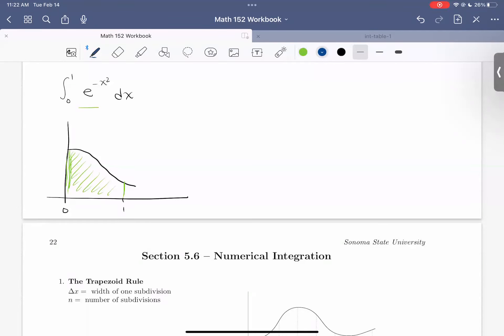And I'll just kind of say that here. So there's no kind of clever u sub, by parts, partial fraction, whatever way of computing this exact number. So we have to estimate.